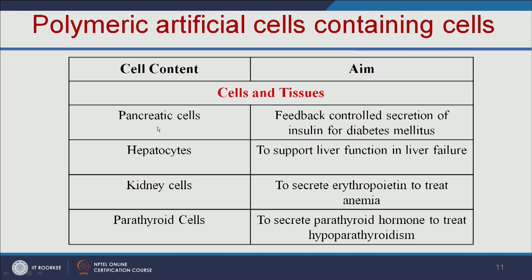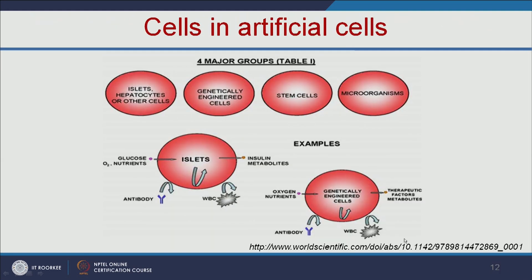If pancreatic cells are encapsulated, they will secrete insulin for diabetes patients. If hepatocytes are encapsulated, they will support liver function in liver failure. If kidney cells are encapsulated, they will secrete erythropoietin to treat anemia. Parathyroid cells can secrete parathyroid hormone to treat hypoparathyroidism. We can also encapsulate genetically engineered cells, stem cells, and even microorganisms. Using islet cells, insulin production depends on glucose levels, and genetically engineered cells can produce various therapeutic factors.